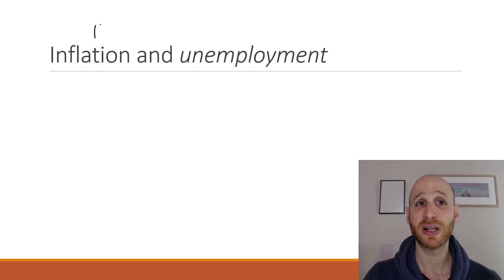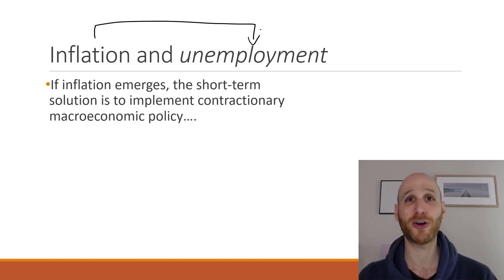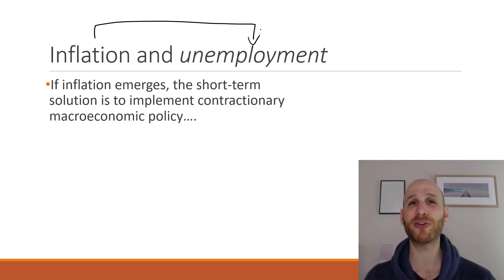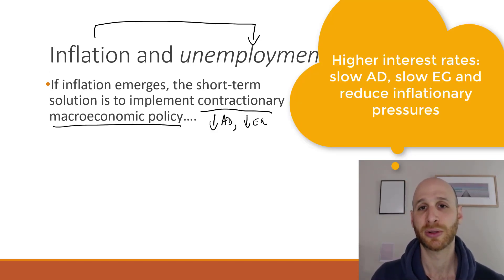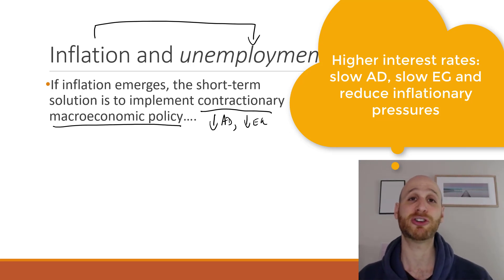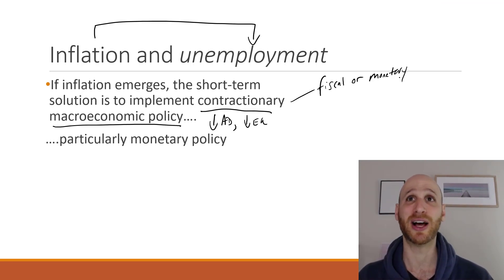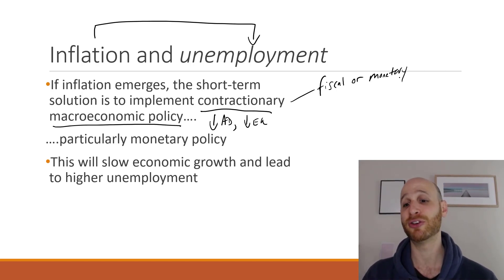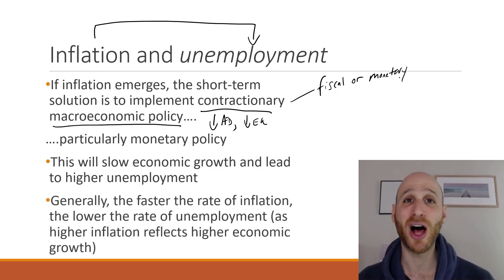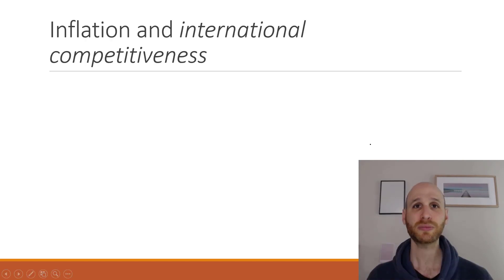Let's have a look at inflation and its effect on unemployment. If inflation is going up, the short-term solution is to stop inflation getting any higher by reducing aggregate demand and slowing the economy. We do that through contractionary fiscal or monetary policy — particularly monetary policy, as interest rates are really effective in slowing inflation. But if we try to slow inflation and slow the economy, we're likely to increase unemployment.